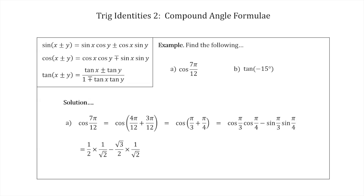Using our exact triangles, we substitute: cos(π/3) = 1/2, cos(π/4) = 1/√2, sin(π/3) = √3/2, sin(π/4) = 1/√2. Multiplying these out gives us (1/2)(1/√2) − (√3/2)(1/√2), which equals 1/(2√2) − √3/(2√2). Since they share a common denominator, this simplifies to (1 − √3)/(2√2).